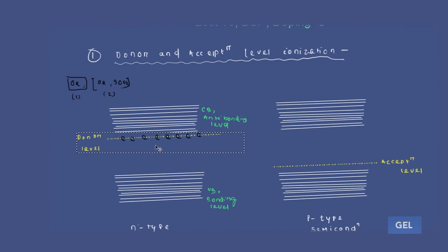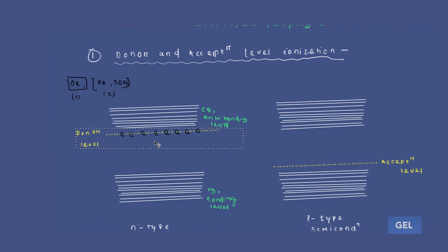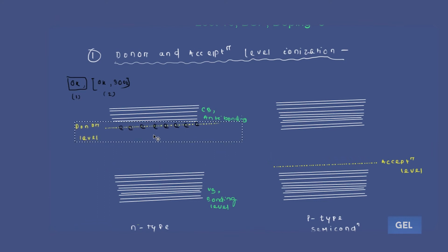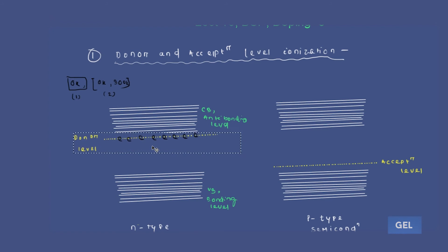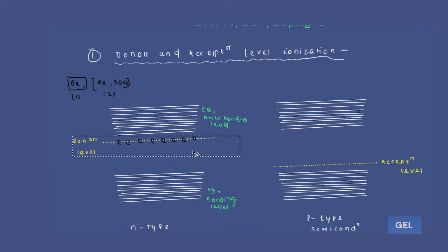The donor energy level also starts shifting toward the conduction band. The same thing happens in the case of the acceptor level.